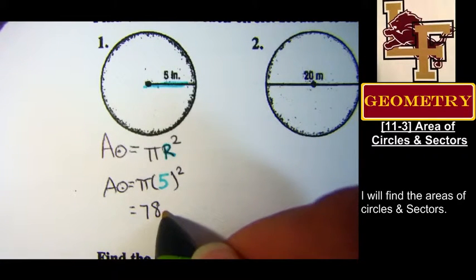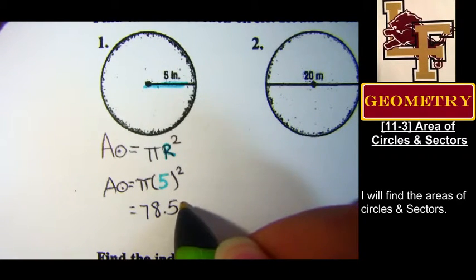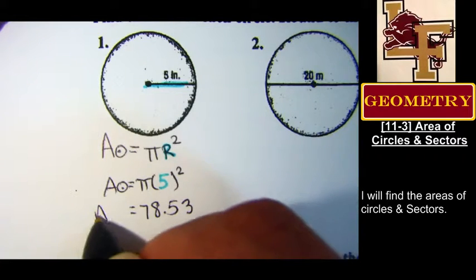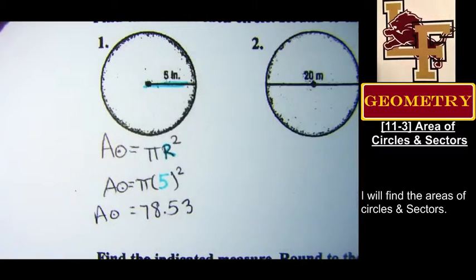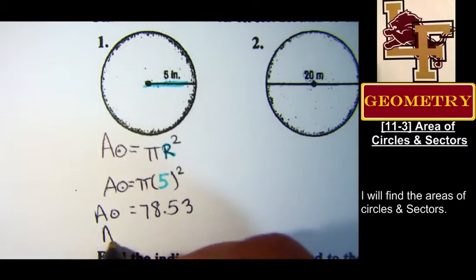78.53, all right, we want to round it to the tenths place. That's one decimal point, so look at the number after the first decimal point. It's less than five, we keep it as is.